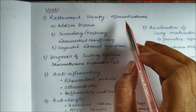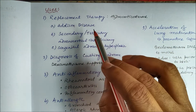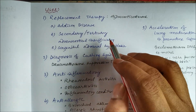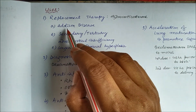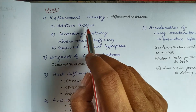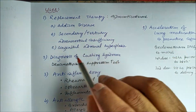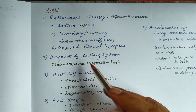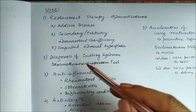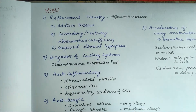The uses of corticosteroids include replacement therapy: hydrocortisone can be used in primary, secondary, or tertiary adrenocortical insufficiency. Primary adrenocortical insufficiency is known as Addison's disease. Corticosteroids can also be used in congenital adrenal hyperplasia, and the dexamethasone suppression test is used for diagnosis of Cushing's syndrome.